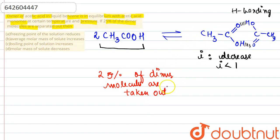Because we are removing the product, what will happen? According to Le Chatelier's principle, the reaction will further be directed towards the right side. So reaction goes more towards the right side. So because of that, i value further decreases.